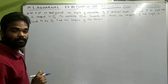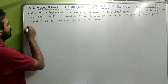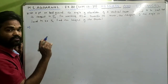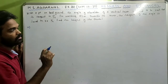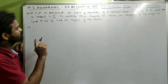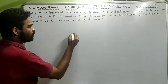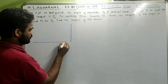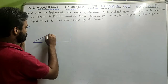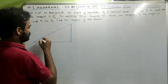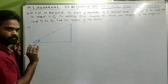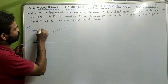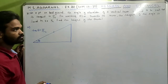Sum 21: At a point on level ground, the angle of elevation of a vertical tower is such that its tangent is 5/12. This means if you're seeing the top from point A, the angle is theta where tan θ = 5/12.